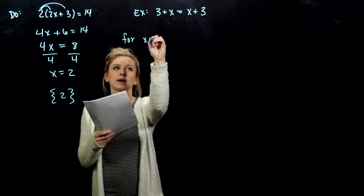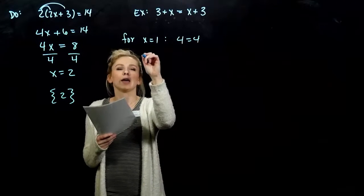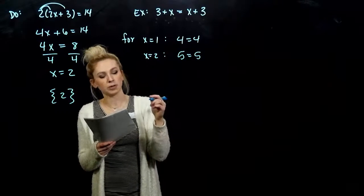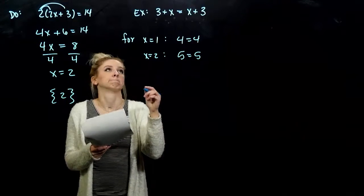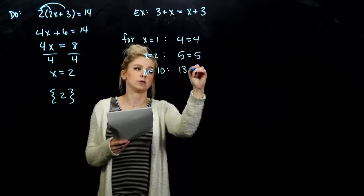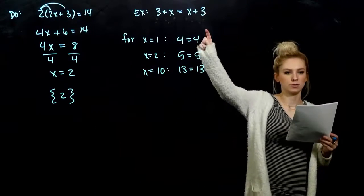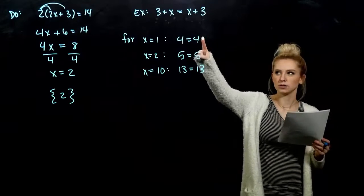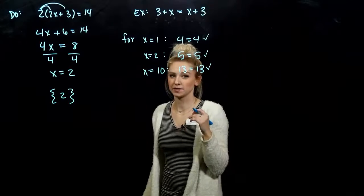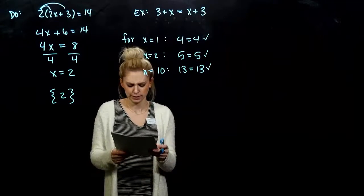If I plug in x equal to 1 into this equation, what do I get out? 4 equals 4. If I plug in x equal to 2, I get out 5 equals 5. If I plug in anything, really, if I want to plug in a 10, 13 equals 13. And what do you notice about every single one of those equivalent equations? They're always true. 5 always equals 5. 13 always equals 13. 4 always equals 4. Seems kind of redundant.